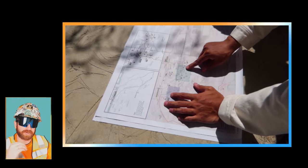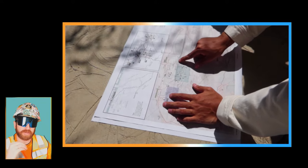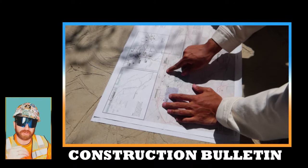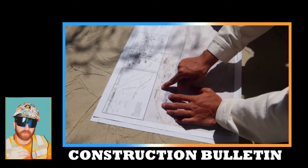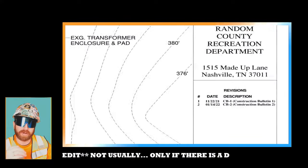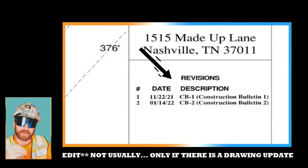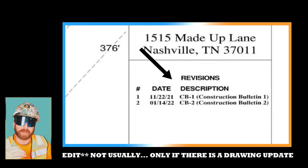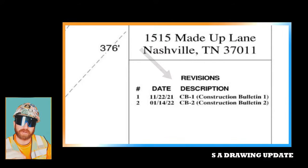If an architect needs to update a drawing, they'll usually issue a construction bulletin. There will usually be a CB1, CB2, indicating construction bulletin 1, construction bulletin 2, etc.